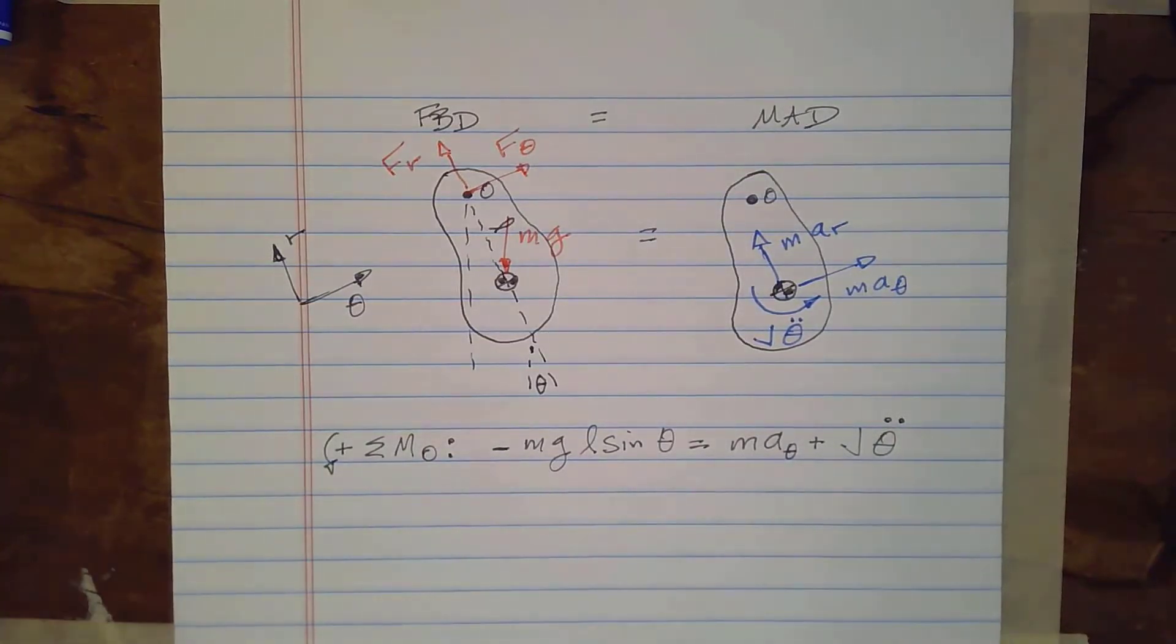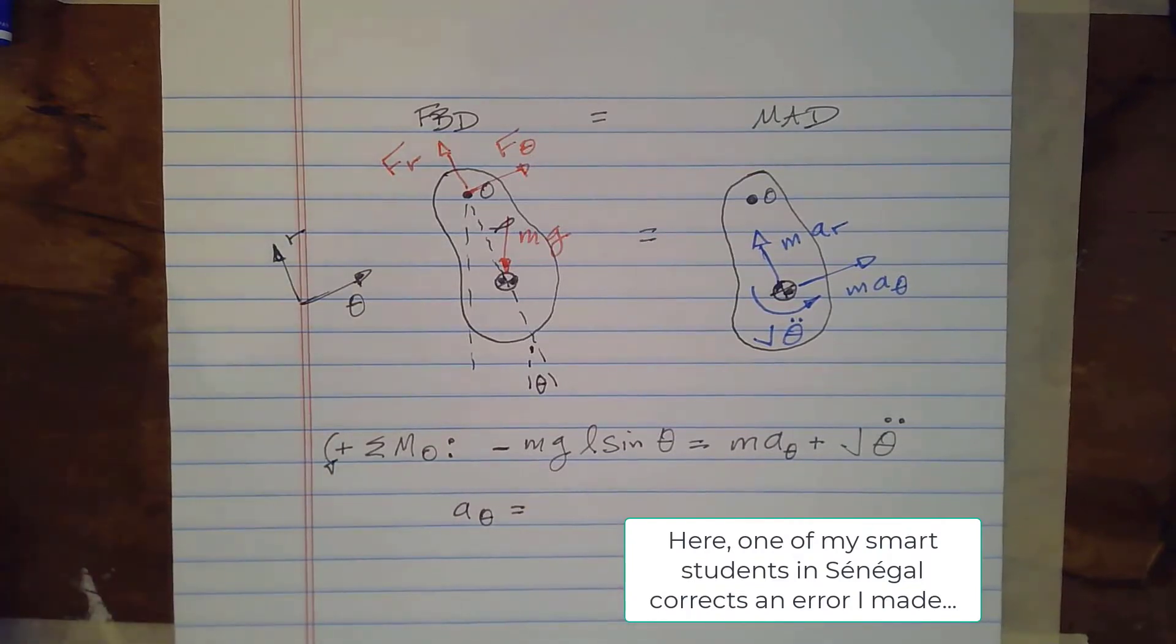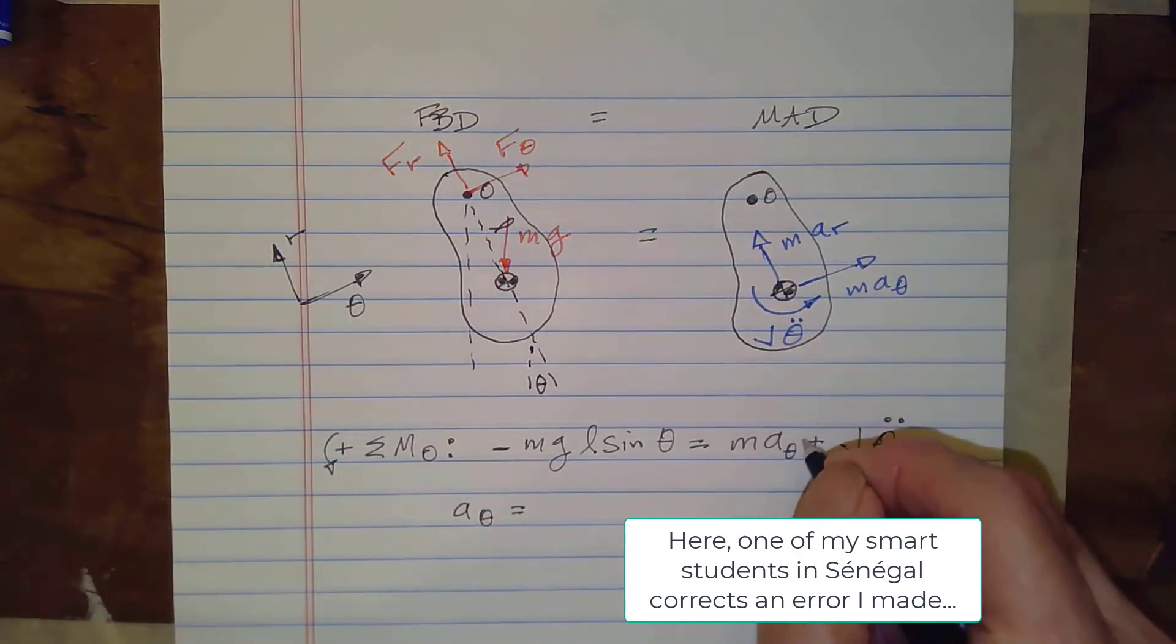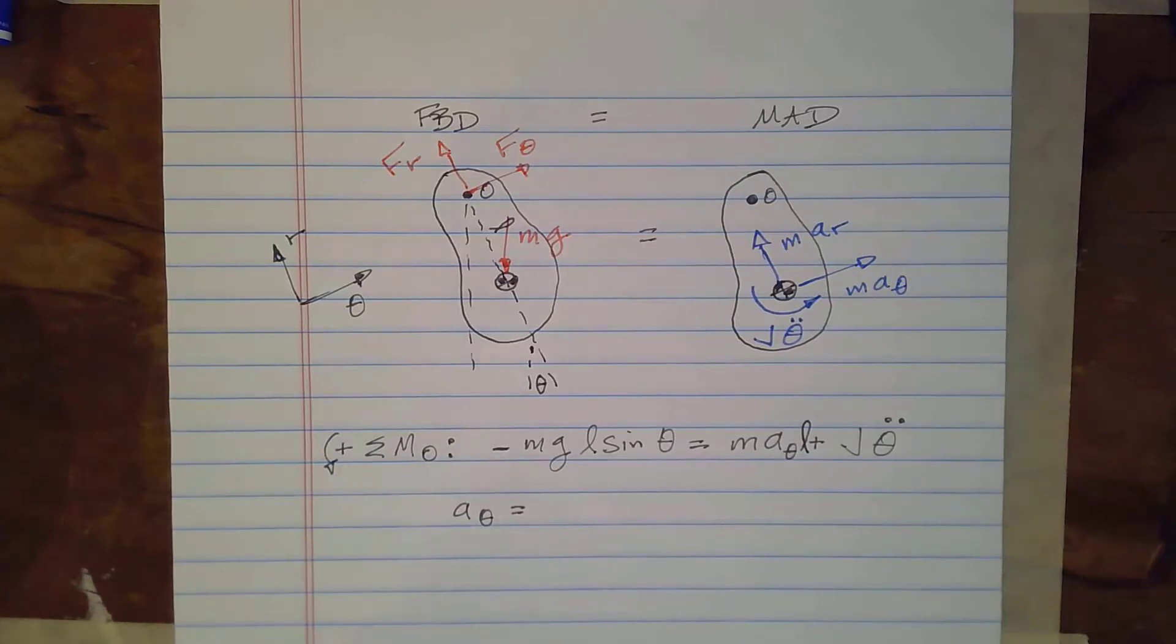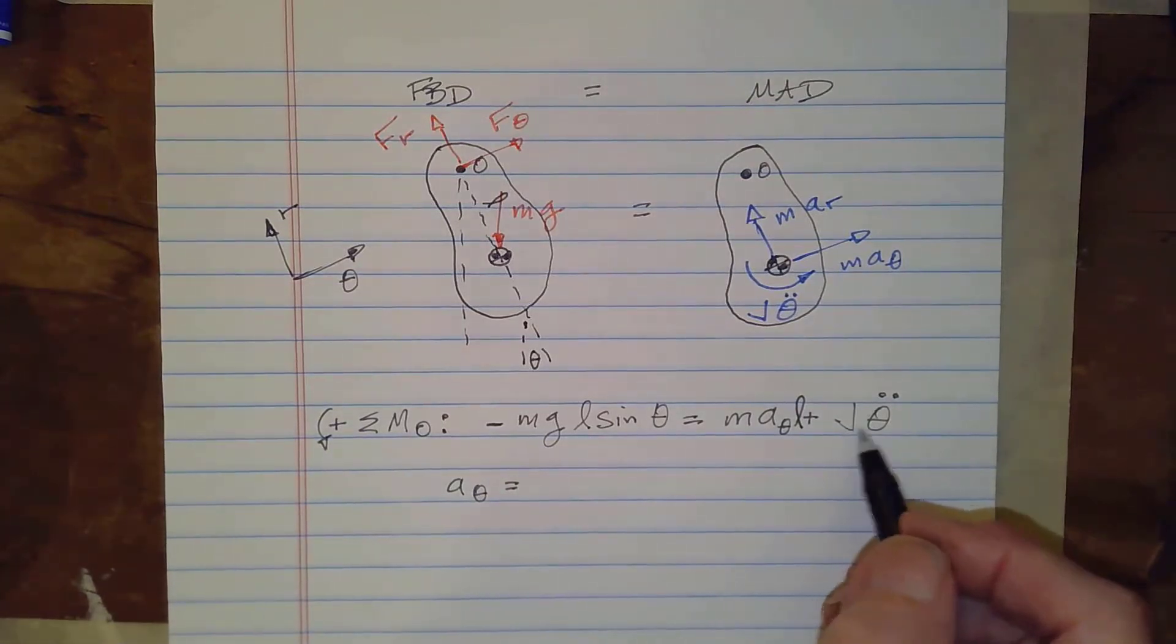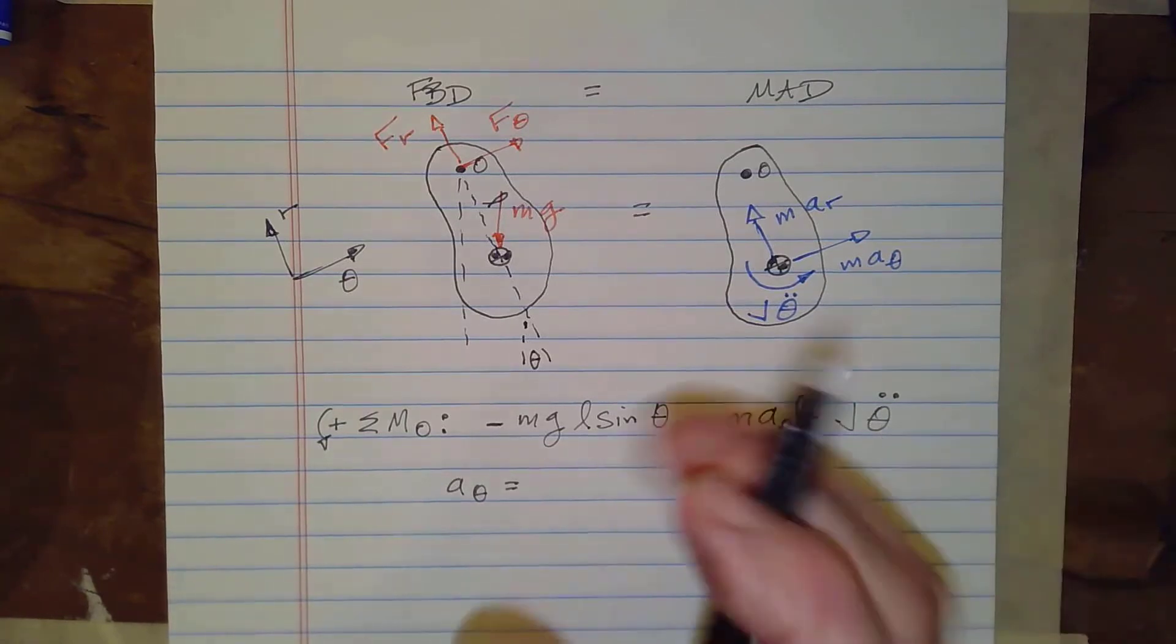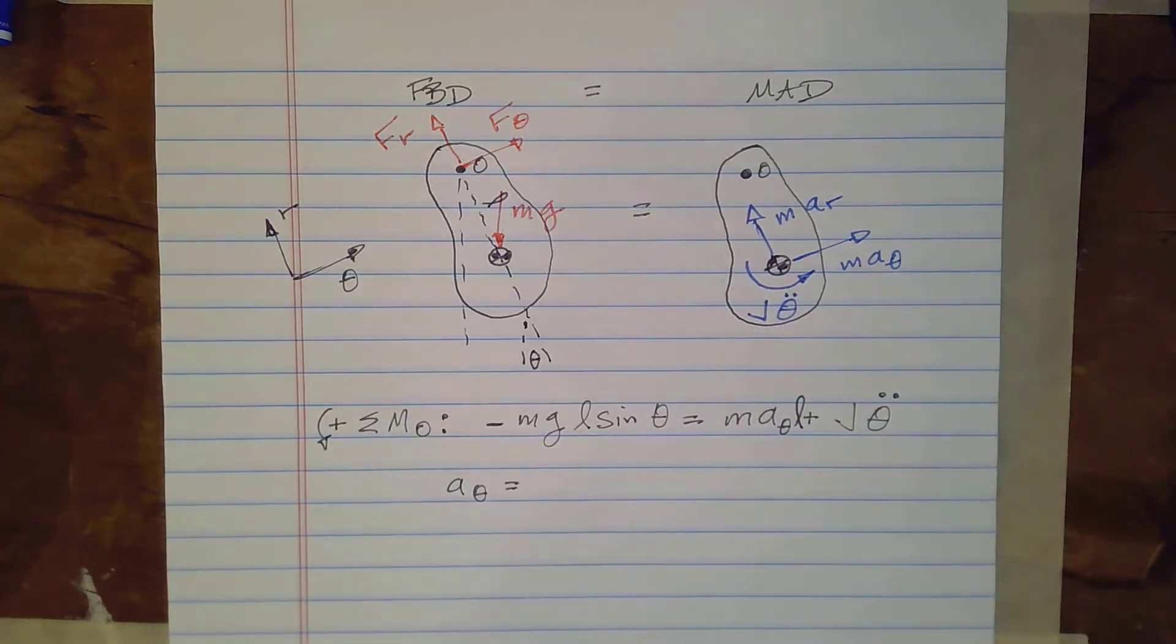So we'll have that force and this has a clockwise moment so this is going to be negative and there's the force and then the moment arm is this distance right here and as you can see that's going to be L sine theta. And then over on the right hand side we have two things that have moments about point O. The m a r vector goes through point O so it has no moment about point O but ma theta does and it is counterclockwise so it will be positive so ma theta. Yes you're right so it's ma theta I need to include the moment arm. Okay all right so yeah so there was a mistake there and I'm glad you pointed it out.